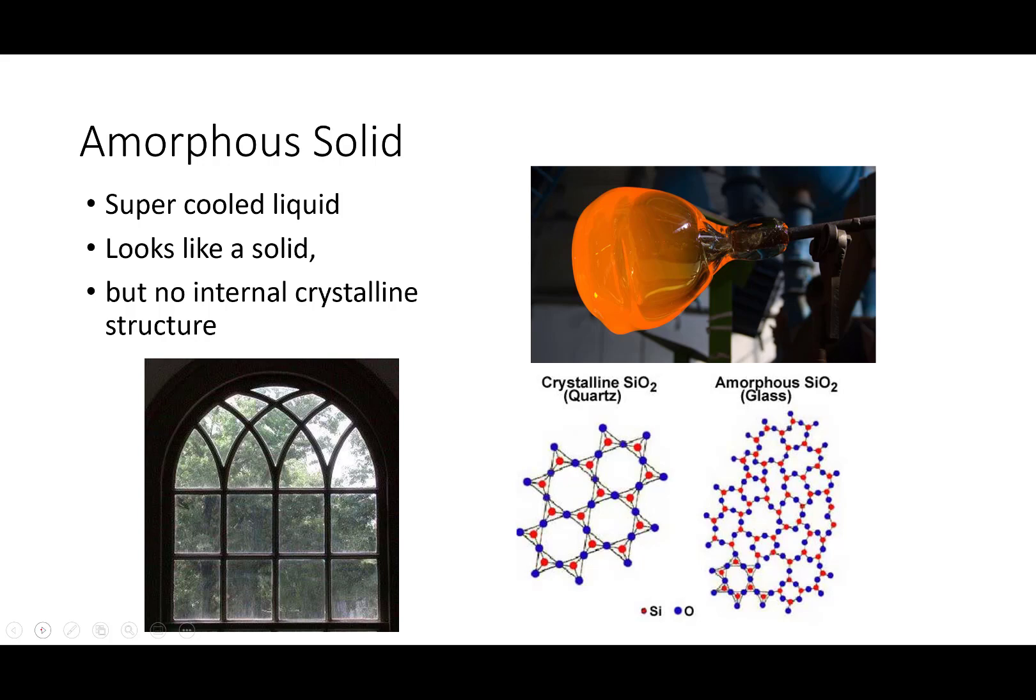There's another weird thing out there when we start talking about solids, liquids and gases. And these are called amorphous solids. Amorphous solids are things that look like a solid, but they're not solid, according to the official chemistry definition of a solid. Because in chemistry, if something is going to be a solid, it has to have a three-dimensional crystalline structure. Well, here's the thing. A glass is actually a super cooled liquid.